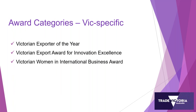The Victorian-specific categories include the Victorian Exporter of the Year, which is drawn from the 13 national export categories — the winners of those categories are separately judged by a judging panel that chooses the Exporter of the Year. The Victorian Export Award for Innovation Excellence is one you cannot enter specifically for; the judging panel puts forward those companies they believe have done exceptional work on an innovation front. So make sure that you emphasise your innovation from the beginning to the end of your application so that you catch the attention of the judges.